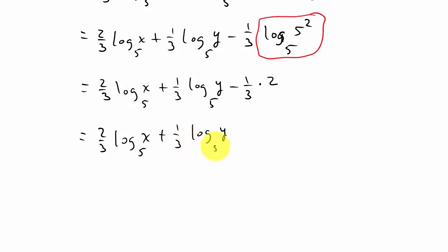So the final answer for problem six is two-thirds log X base five plus one-third log Y base five minus two-thirds.